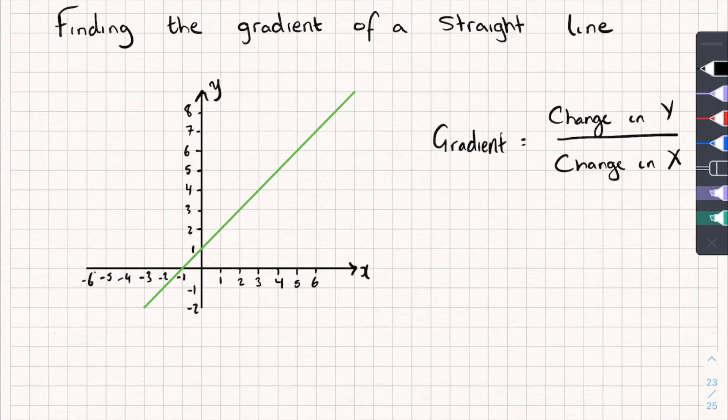So let me just work through a couple examples, and then you should be able to find the gradient of any straight line. First step, you can see here I've got this green line, I want to find its gradient. To do that, we're going to find two points, two coordinates on this line that have whole number values.